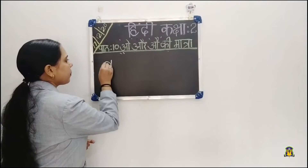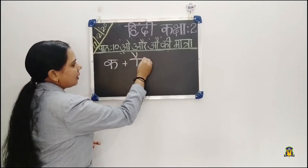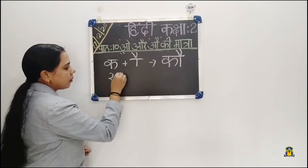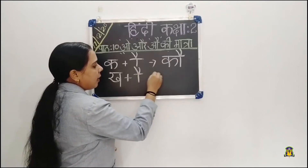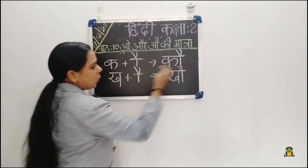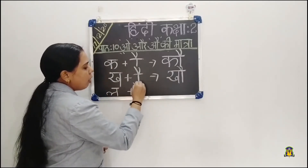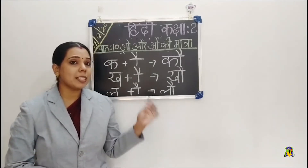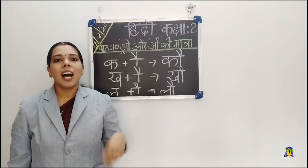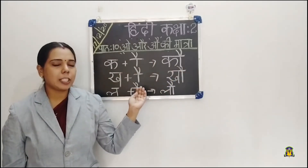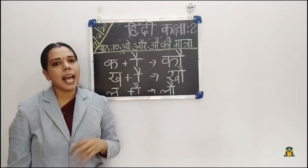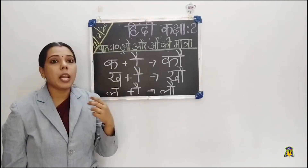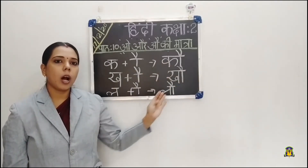So, if ka plus au matra, we get kaw. And ga plus au matra, then gaw. And la plus au matra, then lau. In pronunciation, we need to pronounce it specifically with a long sound: kaw, gaw, lau. Always specify the symbol ow — kaw, gaw, lau. Likewise.